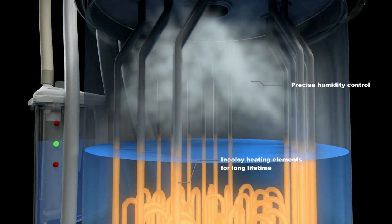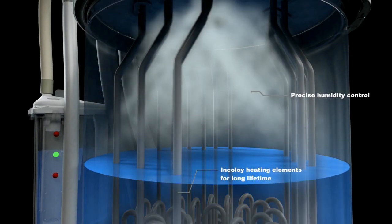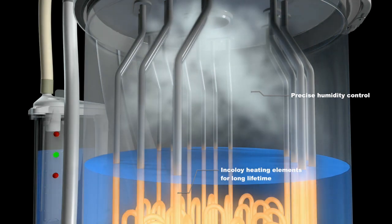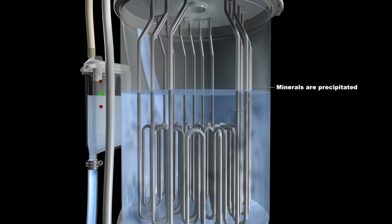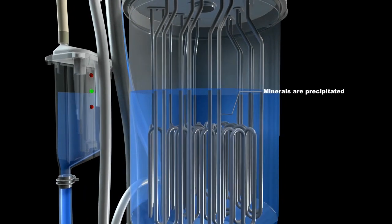Minerals precipitate from the water during the evaporation process in every steam humidifier. Some are removed by periodic drain cycles while the remaining minerals are normally deposited in the steam cylinder.